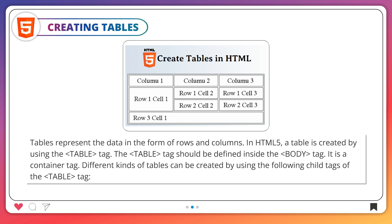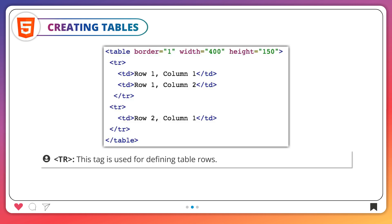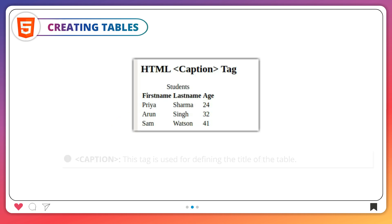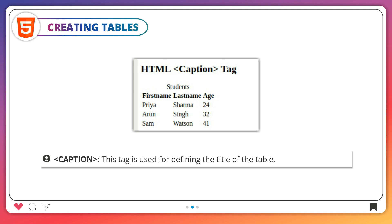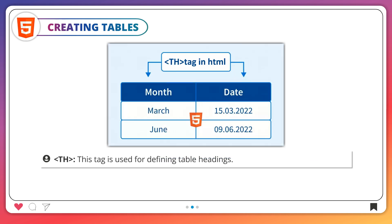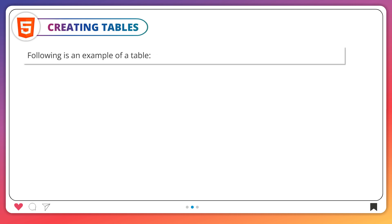Different kinds of tables can be created by using the following child tags of the table tag. TR: this tag is used for defining table rows. TD: this tag is used for defining table data, i.e., the data of the cells. CAPTION: this tag is used for defining the title of the table. TH: this tag is used for defining table headings.